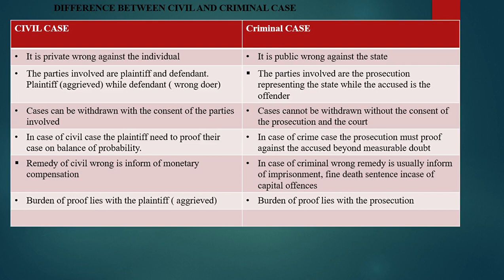In a civil case, cases can be withdrawn with the consent of the parties involved. In a criminal case, cases cannot be withdrawn without the consent of the prosecution and the court. In a civil case, the plaintiff needs to prove their case on the balance of probability, whereas in a criminal case the prosecution must prove the case against the accused beyond reasonable doubt.